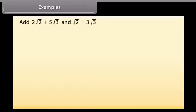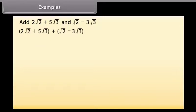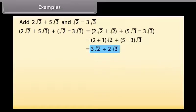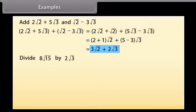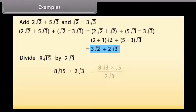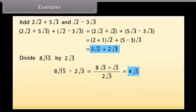Let us add (2√2 + 5√3) and (√2 − 3√3). We can write it as 3√2 + 2√3. Let us now divide 8√15 by 2√3. We can write 8√15 as the product of 8√3 and √5. Hence, the answer is 4√5.